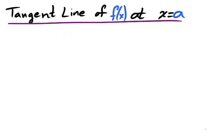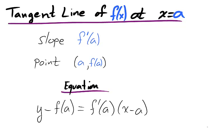We know how to describe the tangent line of a function f at the x value a. It is a line which passes through the point a, f of a, and has the slope f prime of a. Writing the equation of the tangent line in point-slope form, we have that y minus f of a equals f prime of a, x minus a.